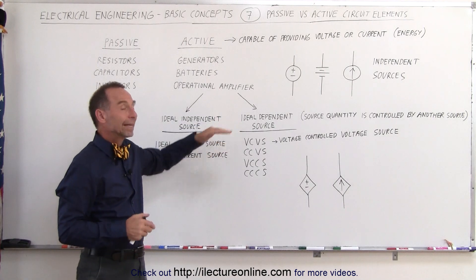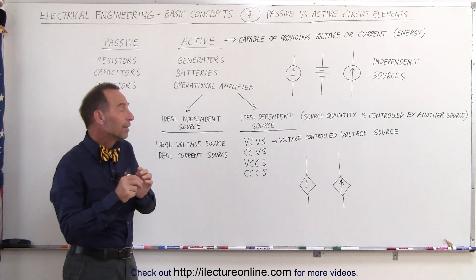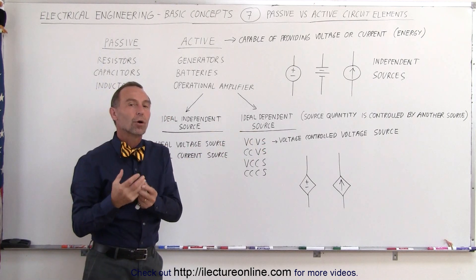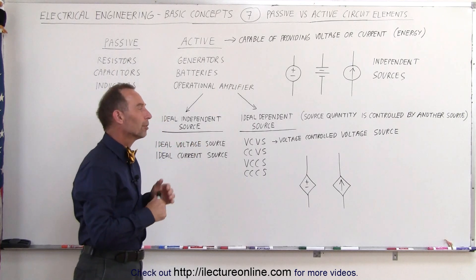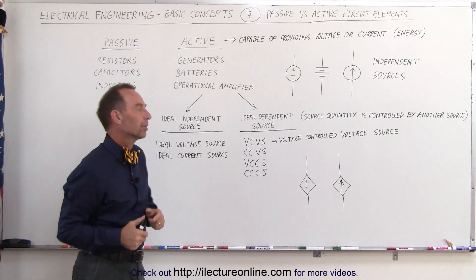An ideal dependent source can still produce sufficient amount of current or sufficient amount of voltage, but it depends on that through some other source. It must get that energy or it must be controlled through some other active element producing that energy so they can maintain the current or maintain the potential difference.